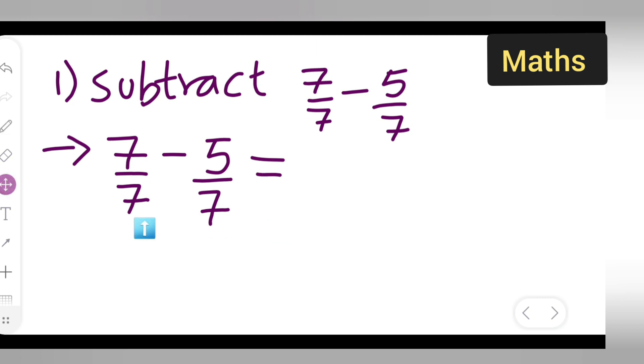Now here the denominator is same, so we will take it as common. Write down 7 minus 5 upon 7.